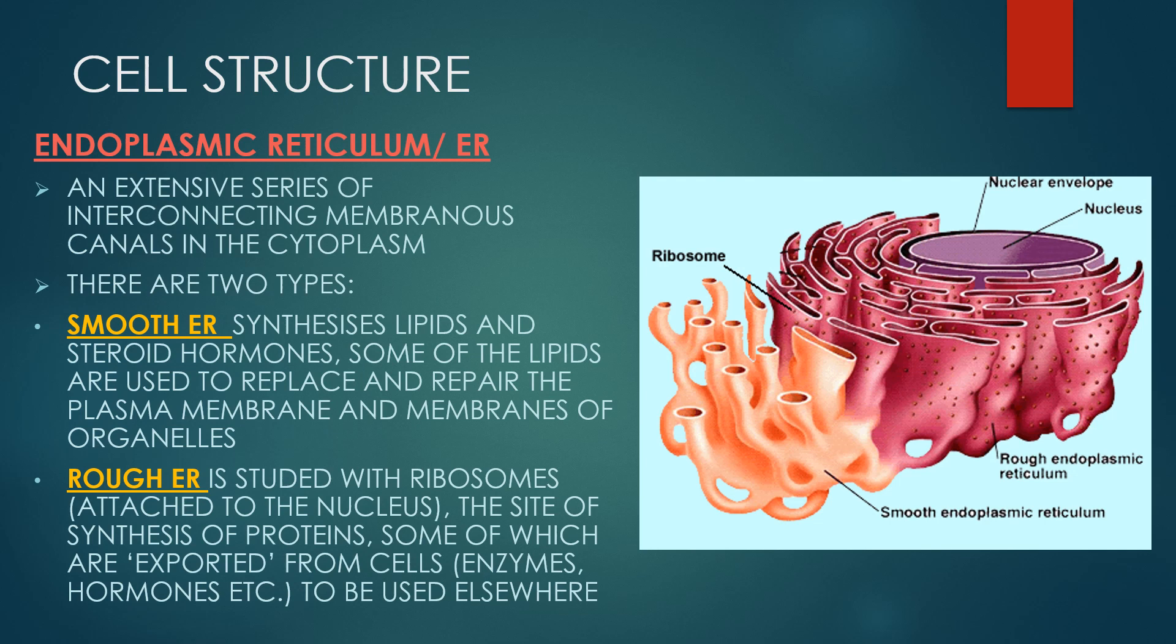Endoplasmic reticulum, ER, is an extensive series of interconnecting membranous canals in the cytoplasm. There are two types, smooth ER and rough ER. Smooth ER is associated with the production and metabolism of fats and steroid hormones. It is smooth because it is not studded with ribosomes and is associated with smooth slippery fats. The rough ER is involved in some protein production, protein folding, quality control and dispatch. It is called rough because it is studded with ribosomes.